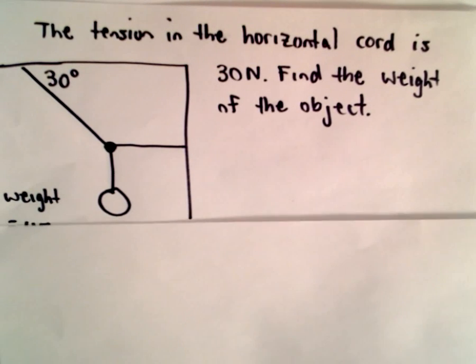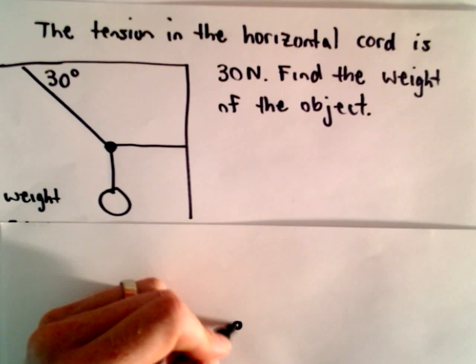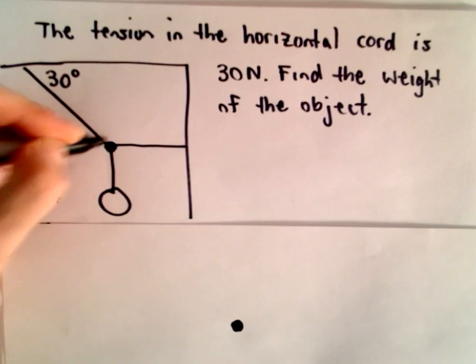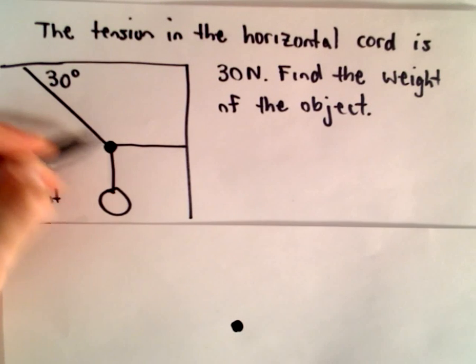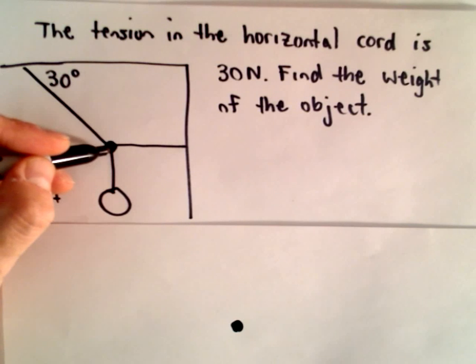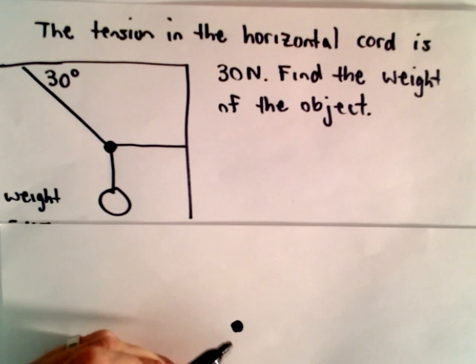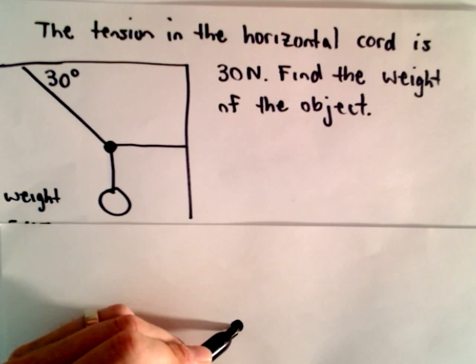So what I'm going to do is I'm going to make what's called a free body diagram. So I'm going to think about this knot that connects the three cords and just label all the vectors that are acting on that knot.